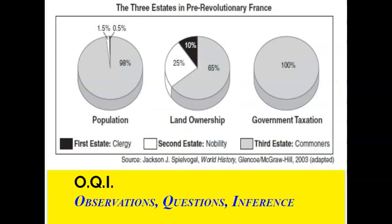Take a moment and analyze this chart. I use a strategy in class called OQI: what do you observe in the chart, what questions could you ask, and what do you think the inference is? Meaning, if we're talking about the word revolution — the coming of change — what could be some reasons why the third estate, or French society as a whole, is looking for change at this time, based on this graph?